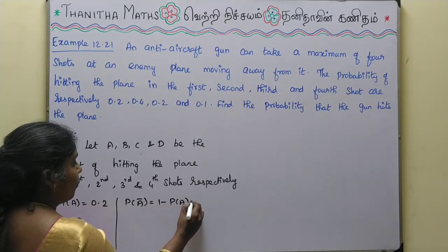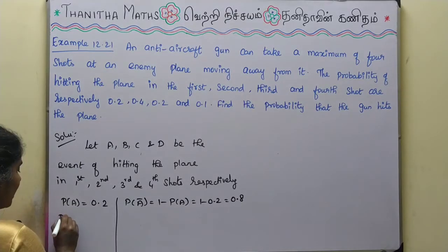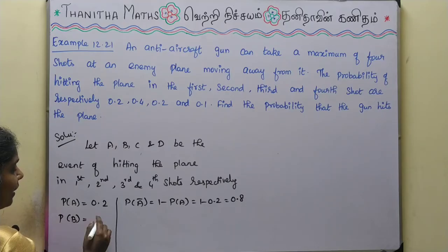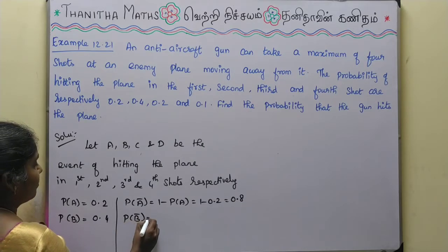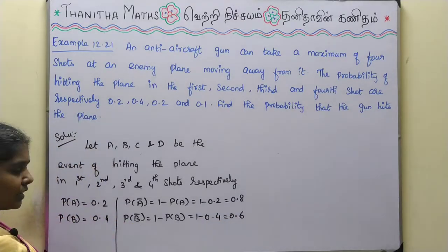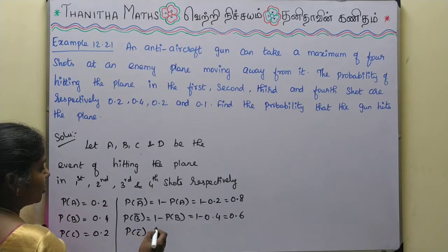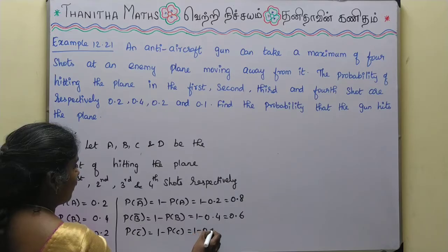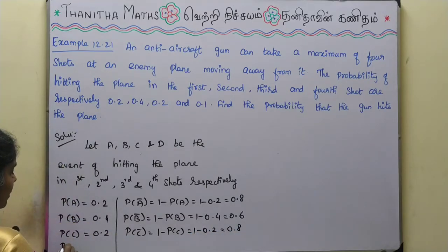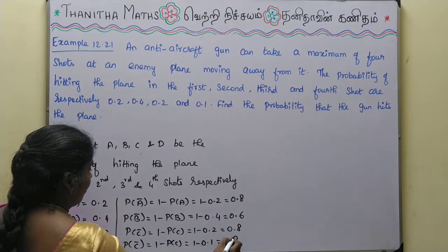P(A) = 0.2, so P(Ā) = 1 − 0.2 = 0.8. P(B) = 0.4, so P(B̄) = 1 − 0.4 = 0.6. P(C) = 0.2, so P(C̄) = 1 − 0.2 = 0.8. P(D) = 0.1, so P(D̄) = 1 − 0.1 = 0.9.